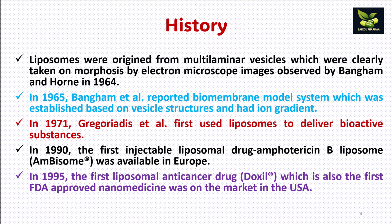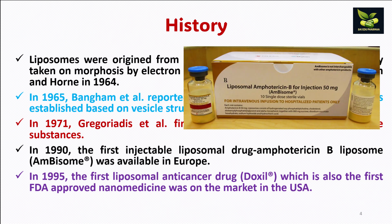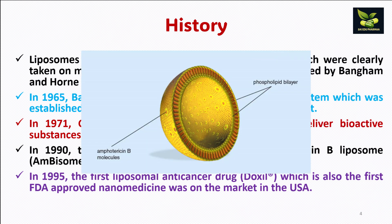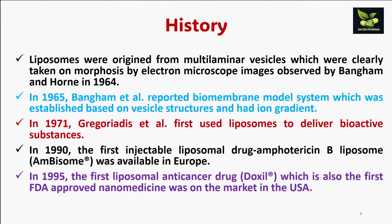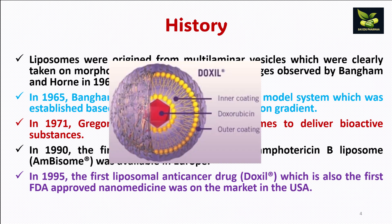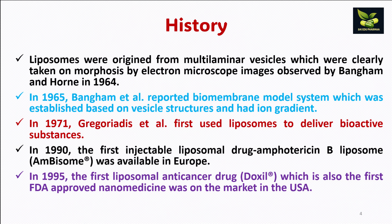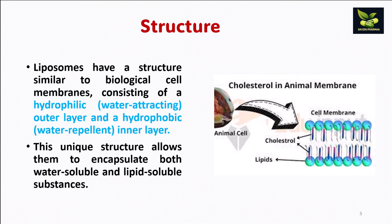In 1990, the first liposomal drug — amphotericin B, an antibiotic — was developed in Europe under the name AmBisome. And in 1995, the first liposomal anti-cancer drug, Doxil, was also the first FDA-approved nanomedicine, which came to market in the USA. This concludes the history of liposomes.